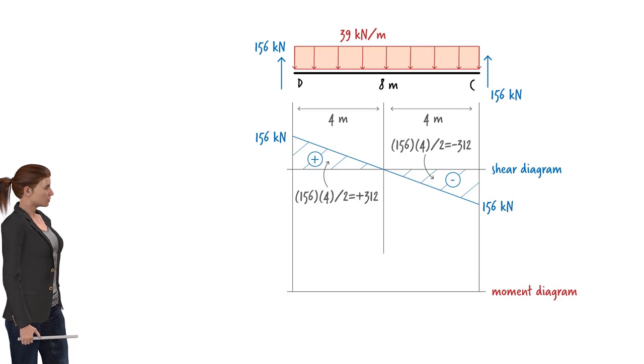Bending moment at the left end of the beam is 0. At the beam's midpoint, bending moment equals 0 plus this area, or 312 kNm. And at the right end of the beam, bending moment equals this value plus this area, or 312 plus negative 312, or 0. Since shear is linear, moment becomes non-linear, quadratic in shape, like this.